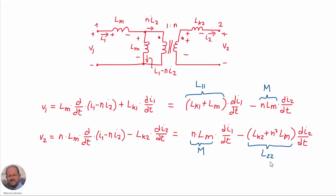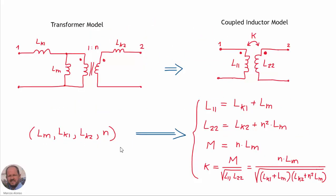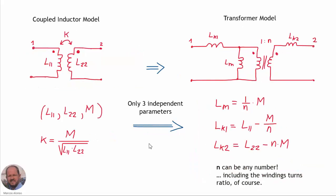With this we have the relationships between the coupled inductor parameters and the transformer parameters. If we have the transformer parameters, we can obtain the three parameters of the coupled inductor using these expressions. We can also calculate the coupling factor. Conversely, if we know the self-inductances and mutual inductance of the coupled inductor, we can calculate the transformer model parameters.